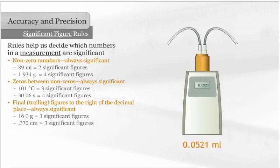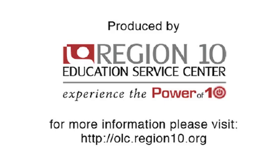Finally, any zeros to the left of a number are not significant. These are called leading zeros. For instance, 0.0521 milliliters has three significant figures.